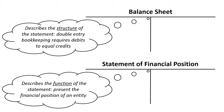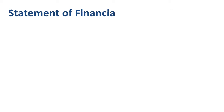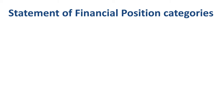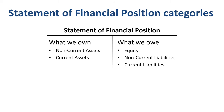When reading a statement of financial position, it is important to start off reviewing it by category: non-current assets and current assets on the left; equity, non-current liabilities, and current liabilities on the right.